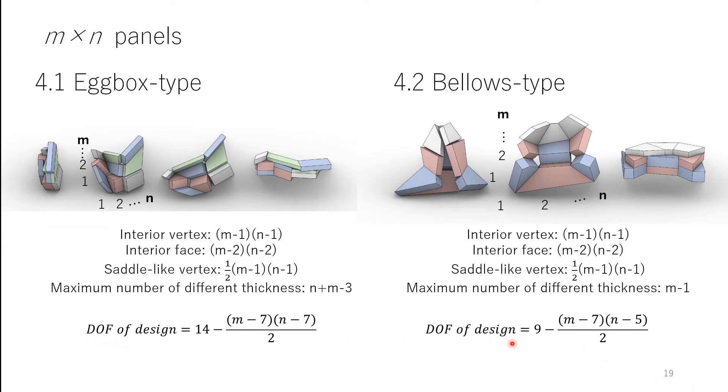We obtain the hyperbolic form. For example, the equation of eggbox type suggests that if m is smaller than 7, we can increase n arbitrarily, while we still have design freedom. However, when both m and n increase, the DOF becomes negative. In other words, the structure is over-constrained.